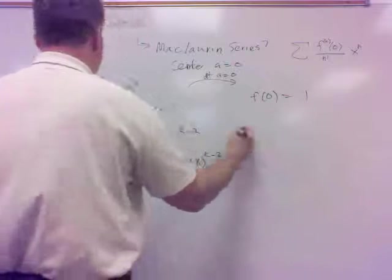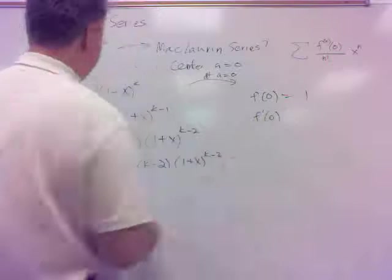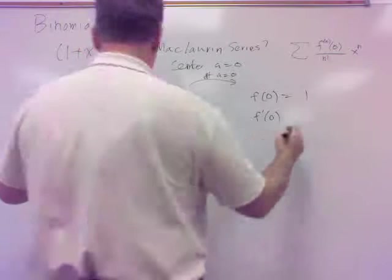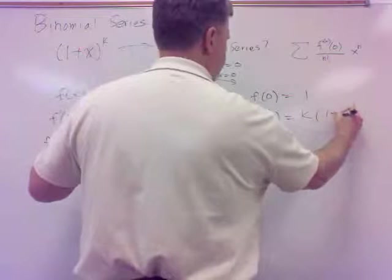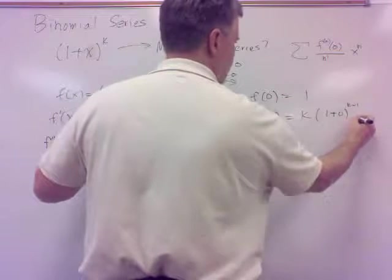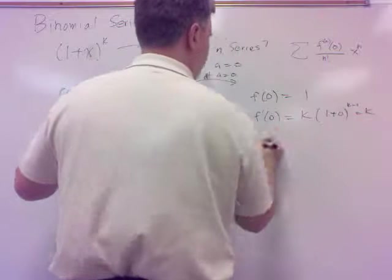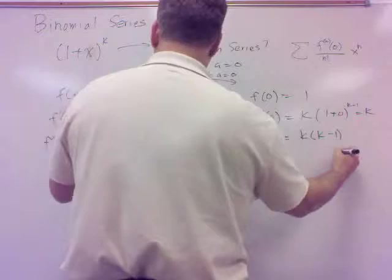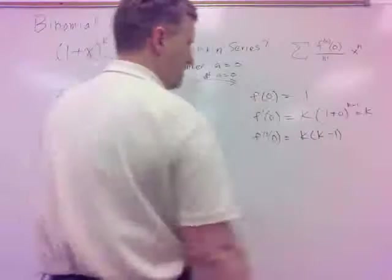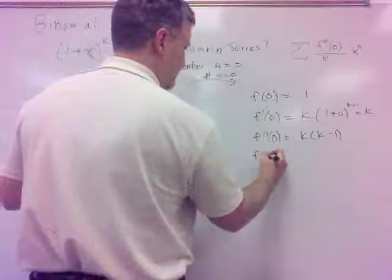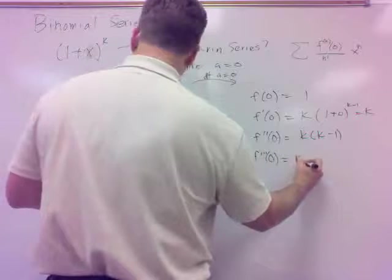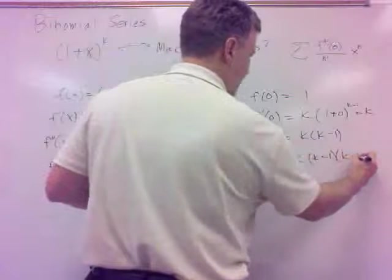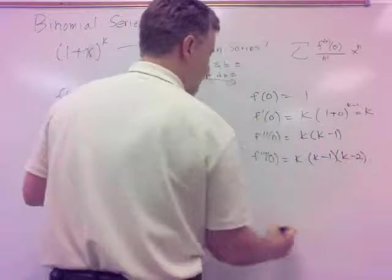So f of 0, that would just be 1. f prime is 0, I'm just plugging in x to be 1. So it would be k times (1+0), k minus 1. Well, that's just 1. That's just k. And then the second derivative would be k, k minus 1. That's 1 to the power. That's still just 1. So that's k, k minus 1. The third derivative is k, k minus 1, k minus 2 because this is just 1 to a power. It's just 1.